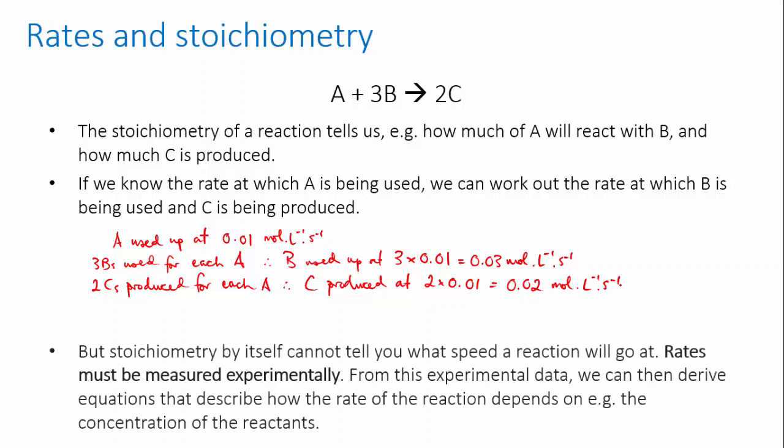However, knowing the stoichiometry of a reaction can't help you predict the rate from scratch. This you have to find out by experiment. For instance, we had to measure the rate of consumption of A in the example above before we could work out anything about the rates of B and C.